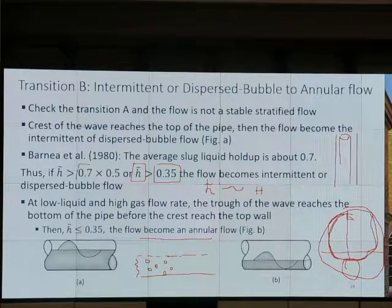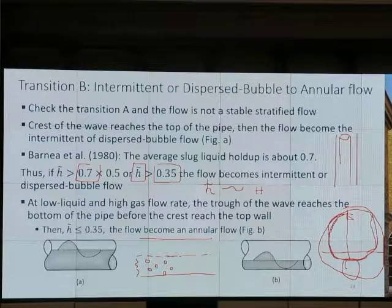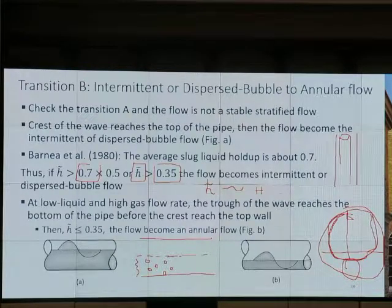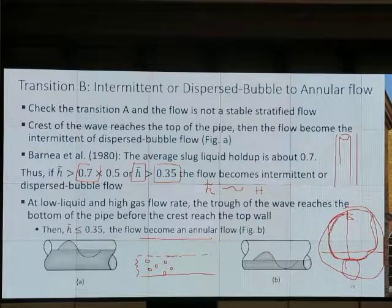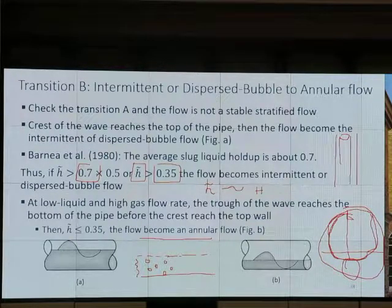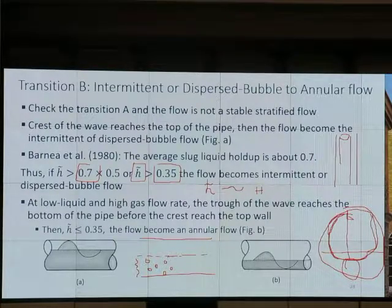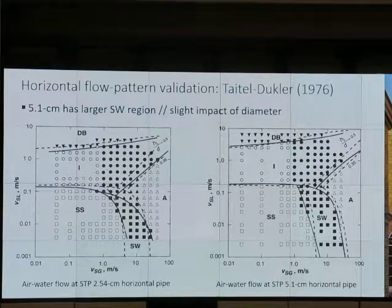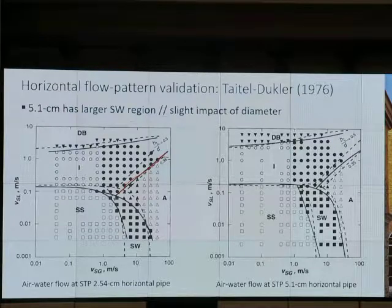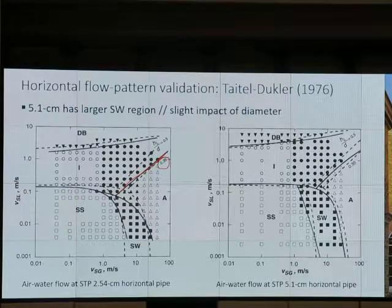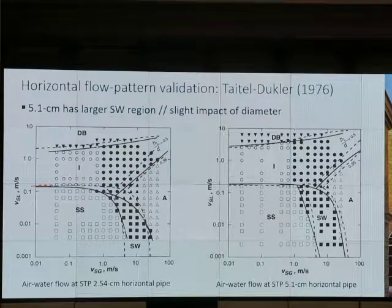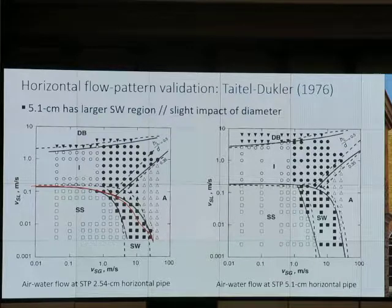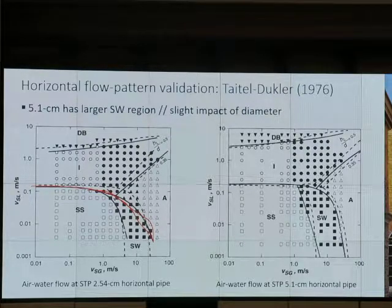Where does that 0.7 come from? It comes from Barnea. Barnea et al. told us that it is 0.7. Let's take a look at the actual flow pattern map. This line is transition B - HL tilde greater than or equal to 0.35. This line is transition A, or competition between suction force and net gravity force. Barnea et al., that dash line, is based on the bubble inside the liquid film if we ever have liquid film.